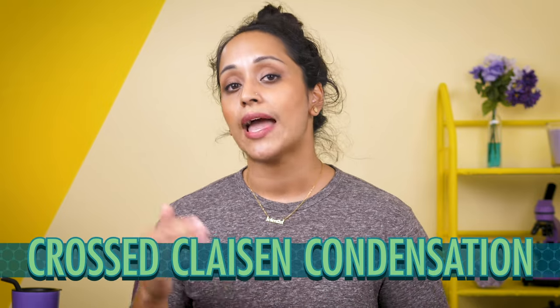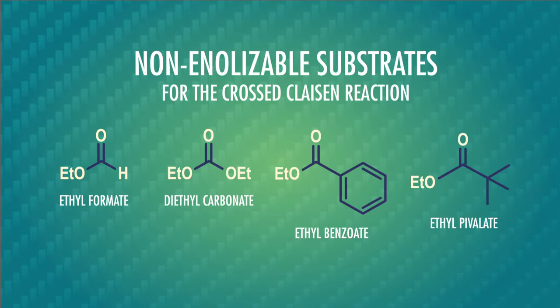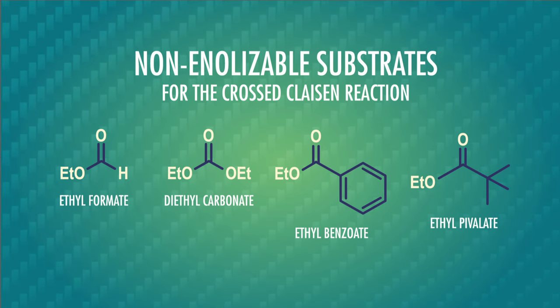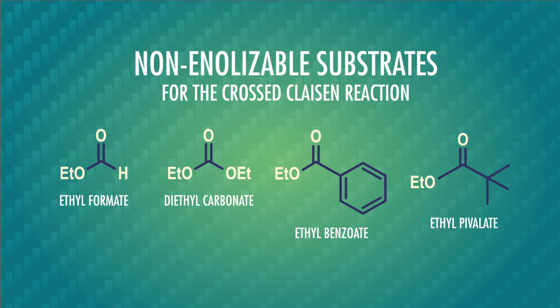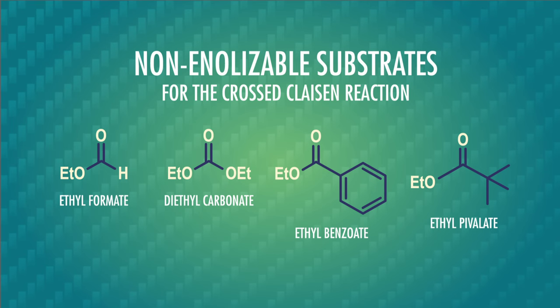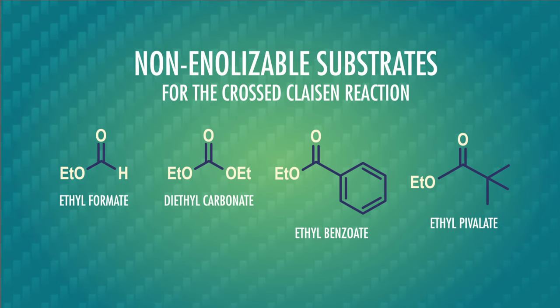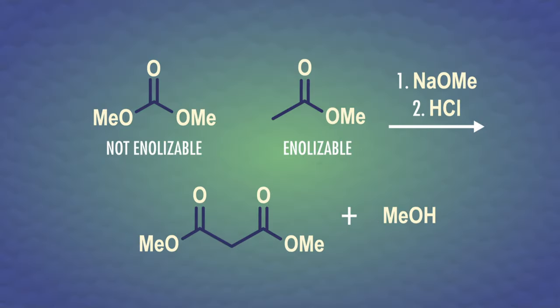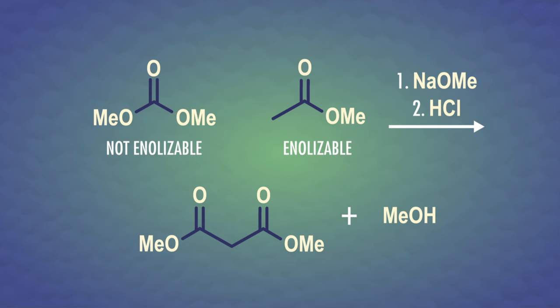We also need our enolizable partner to have a minimum of two protons to start so the deprotonation can happen. The reaction we just did involved two identical esters, but we can also do a crossed Claisen condensation where we have two different starting molecules. In this case, we need to deliberately choose one molecule that can form an enolate and one that can't, to avoid a messy mixture of four different products. Basically, we need to make sure that one of the substrates doesn't have alpha-hydrogens. Also, we set this up with an excess of the non-enolizable reactant. That way, there's a better chance that the enolate will react with the non-enolizable substrate — which is what we want — rather than react with another molecule of itself, which we don't. Overall, the mechanism of a cross-Claisen condensation is the same as a Claisen condensation, and we end up with a carbonyl group beta to our ester. In this particular example, we've made a diester.